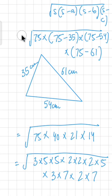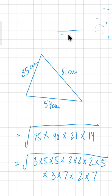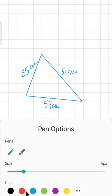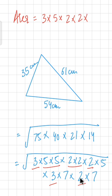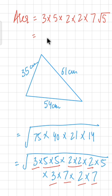From the square root, we take out numbers that appear in pairs. The two 3s form a pair, giving 3. The two 5s form a pair, giving 5. The first pair of 2s gives 2, and the second pair of 2s gives another 2. The two 7s form a pair, giving 7. The remaining single 5 stays under the root as √5. So we get 3 × 5 × 2 × 2 × 7 × √5 = 420√5.